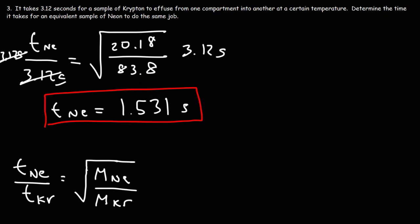So the time it takes for an equivalent sample of neon to do the same job is 1.531 seconds. That's it for this video — now you know how to solve chemistry problems associated with Graham's Law of Effusion. Thanks for watching.